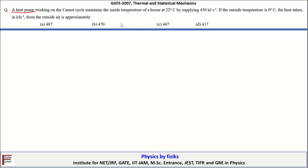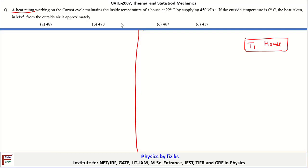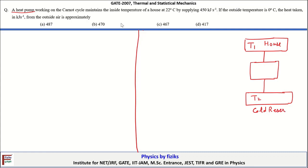Let's understand this problem by drawing a diagram. We have two bodies at different temperatures. One is at temperature T1, which I will call the house. The heat pump rejects heat inside the house. It works like a refrigerator. Here T2 is the cold reservoir, and the pump extracts heat Q2 from the cold reservoir at temperature T2.